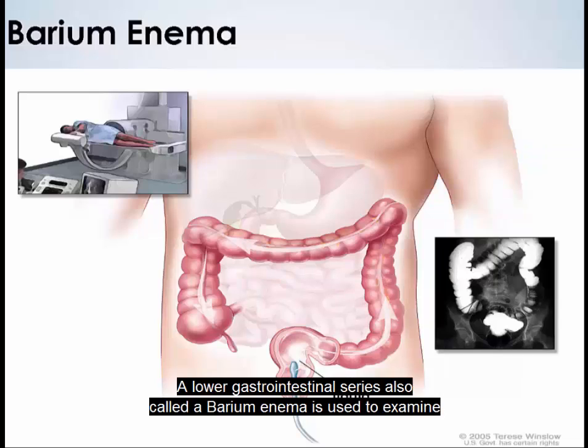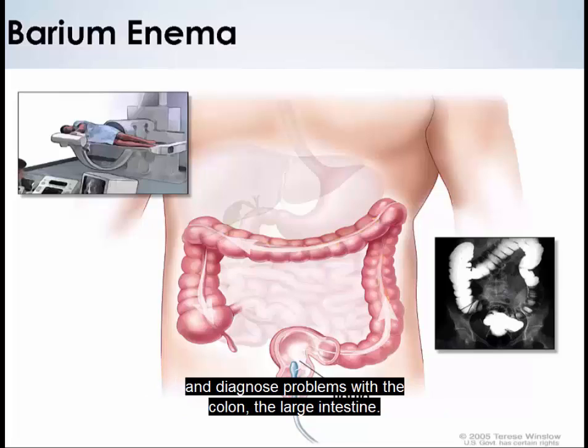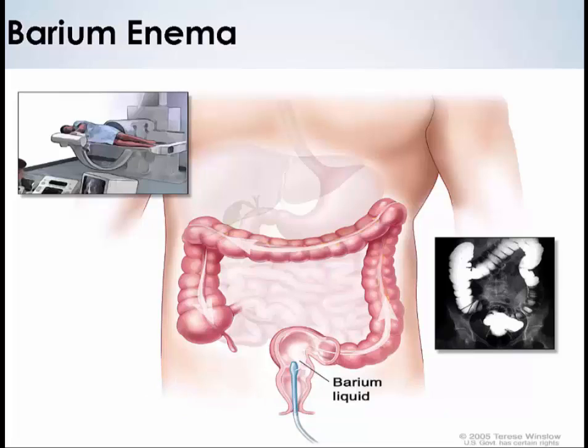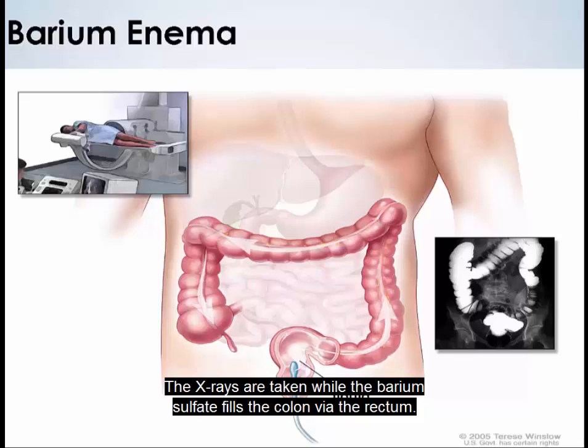A lower gastrointestinal series, also called a barium enema, is used to examine and diagnose problems with the colon, the large intestine. The x-rays are taken while the barium sulfate fills the colon via the rectum.